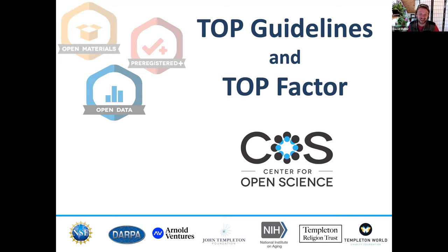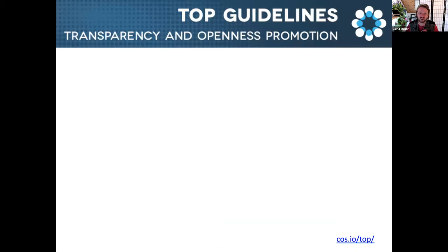Hello, my name is David Meller and I'm from the Center for Open Science. This is a short explainer about the TOP guidelines and TOP factor. The Transparency and Openness Promotion Guidelines include eight modular standards that journals or funders can apply to increase the openness and reproducibility of scientific research.